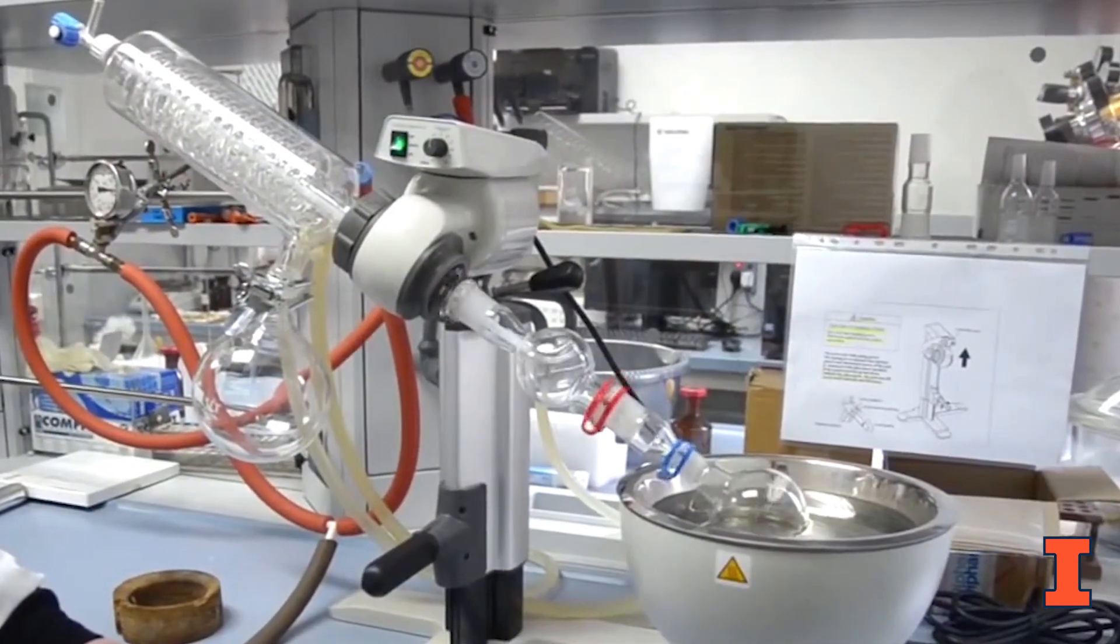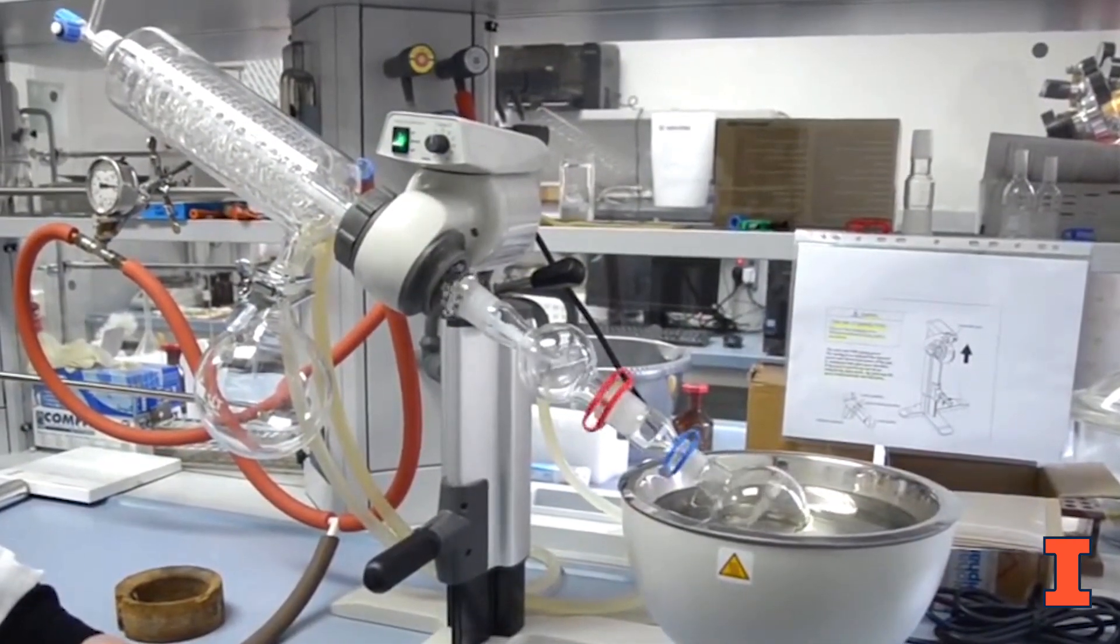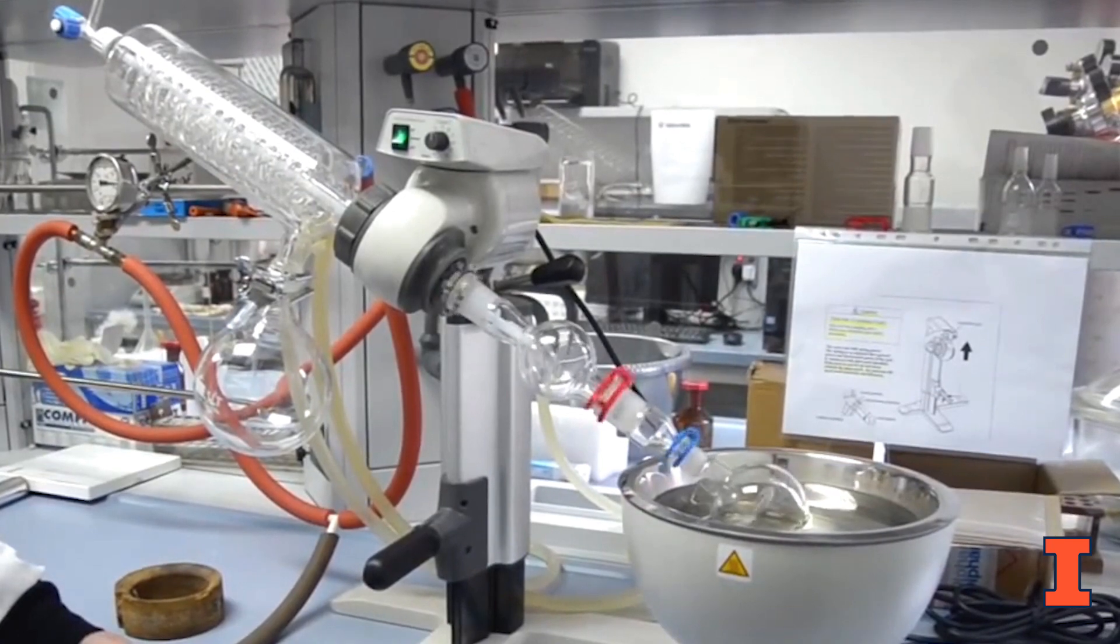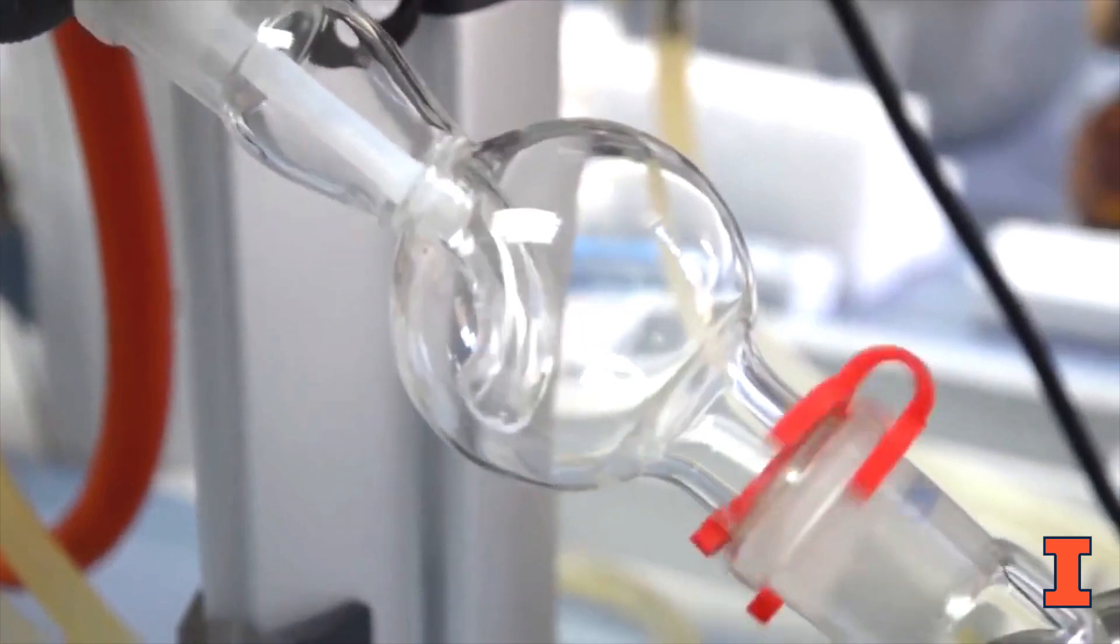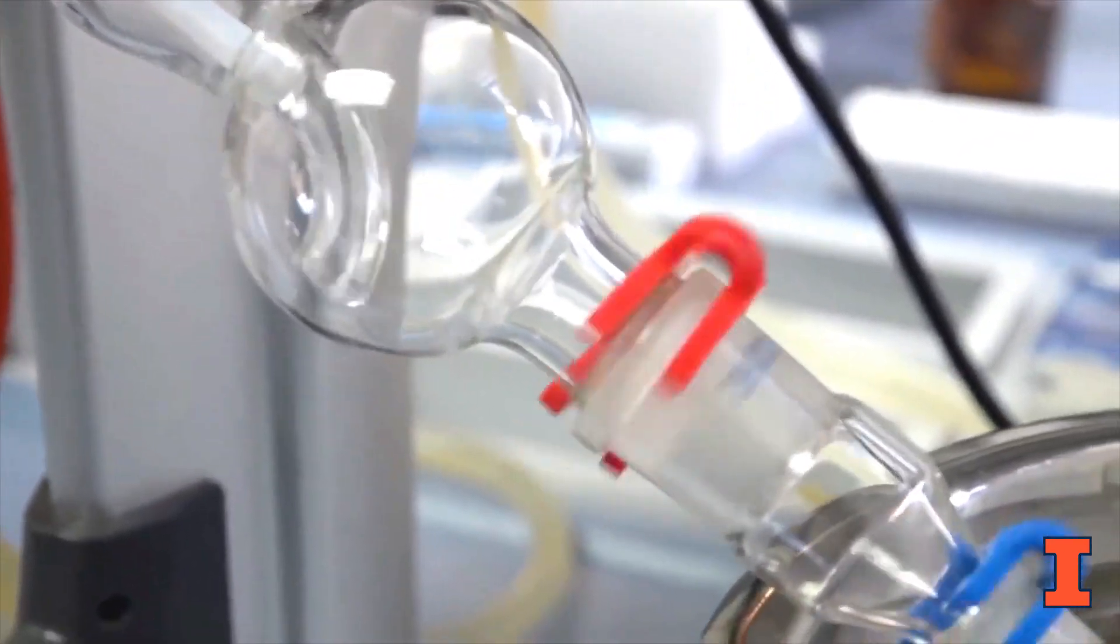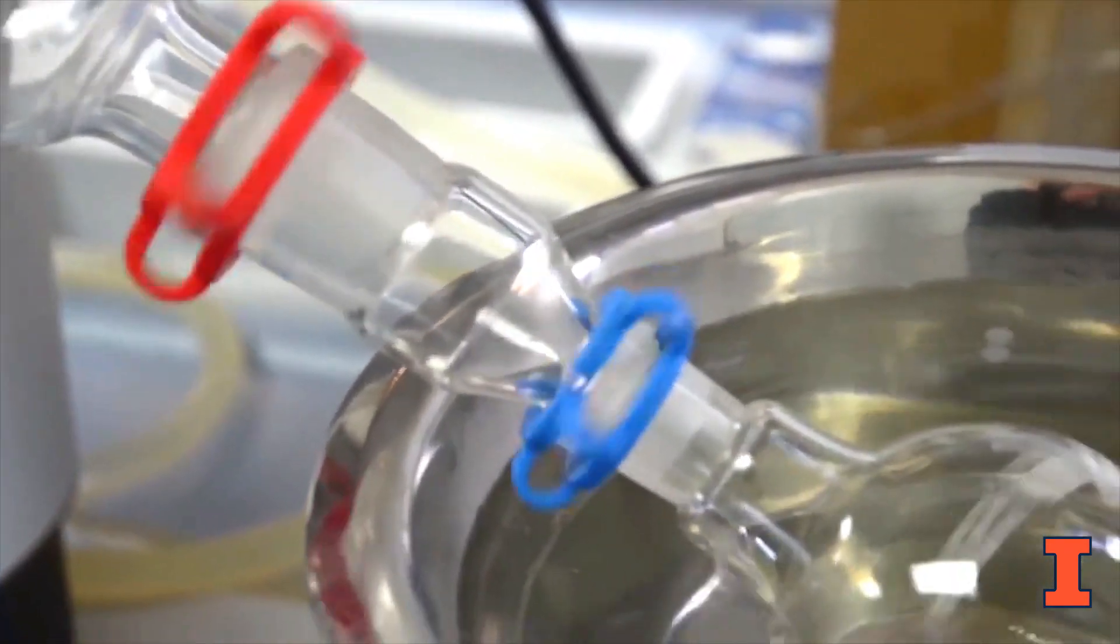Before distilling any peroxide forming chemicals, always test to ensure that there are no peroxides present. Never distill peroxide forming chemicals to dryness. Leave at least 10 to 20% in the still to help prevent possible explosions.